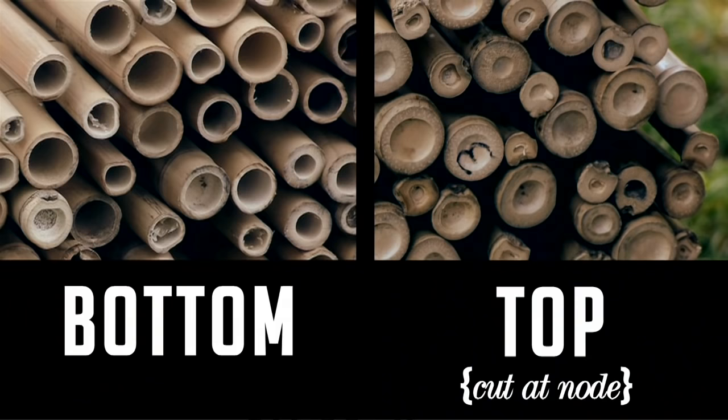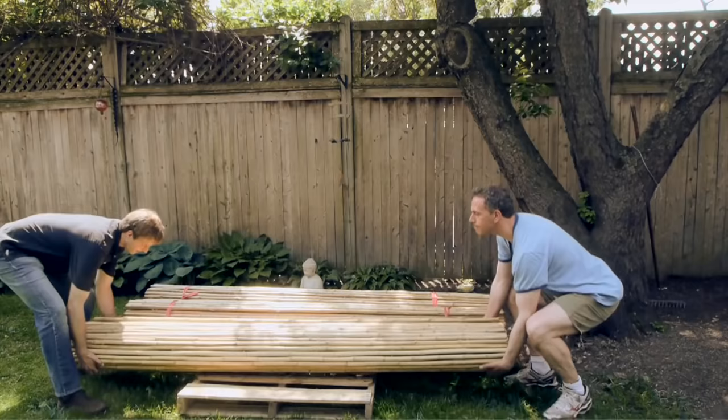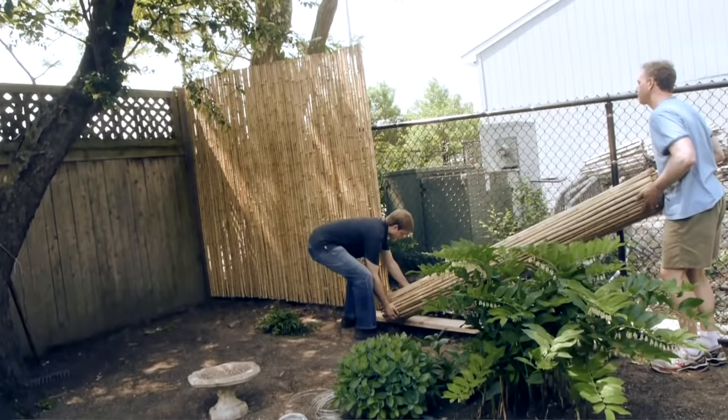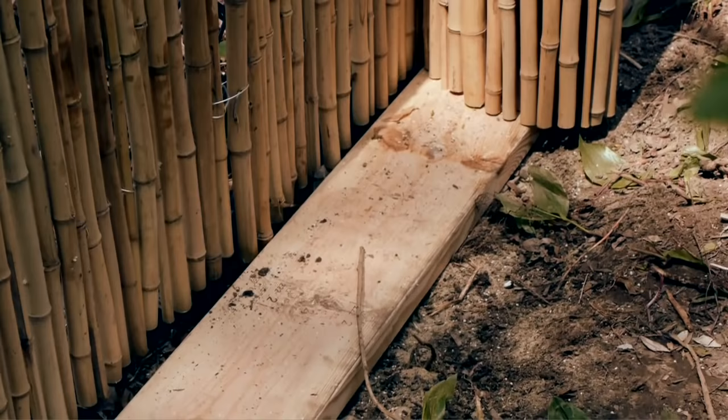The top of the roll is the end cut at the node. We're resting the roll on this 2x8 plank to give us a flat surface to roll it out, and it also keeps it a little bit off the ground to protect the fence from moisture.